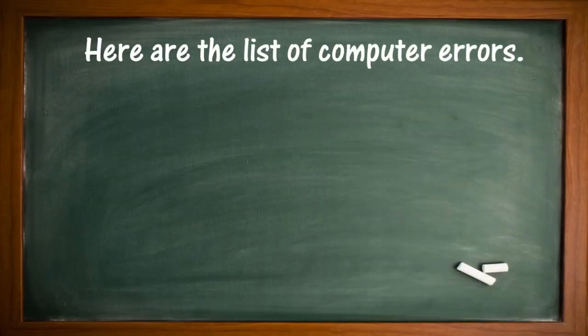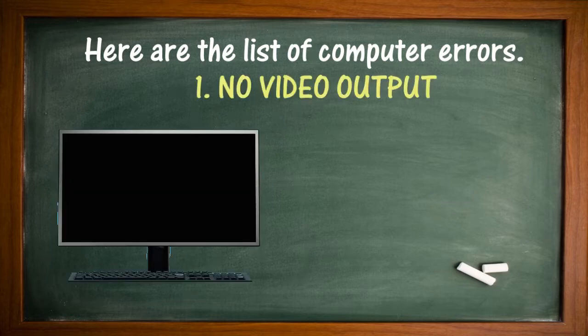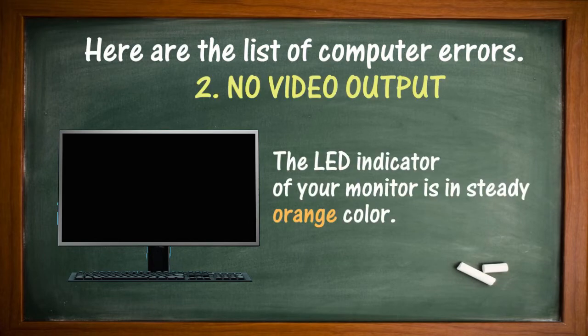Error 1: No video output — When you open your PC, nothing shows up on your monitor and the LED indicator of your monitor is flashing in yellow color. Error 2: No video output — Same as number 1, but now the LED indicator of your monitor is in steady orange color.